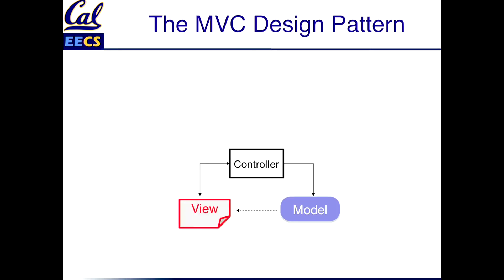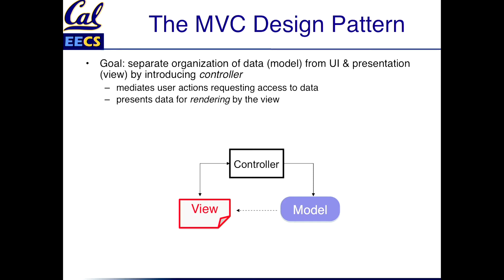So what is that? The idea is if you have an application that is manipulating some data and interacts with users, you can separate the organization and storage of the data — we call that part the model — from the user interface and the way the data is presented — we call that part the view. What mediates the interaction between them is an intermediate thing called the controller. When the user requests access to data, the controller is where the logic lives that mediates that access. When the model wants to present data that the user asks for, the controller mediates getting the data from the model and making it available for the user to see.